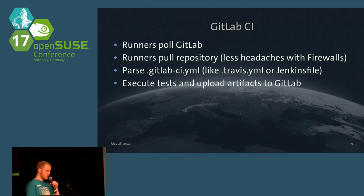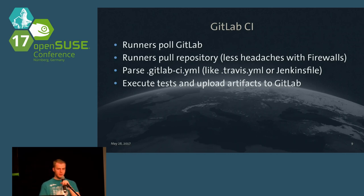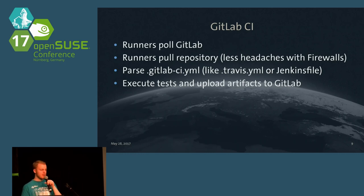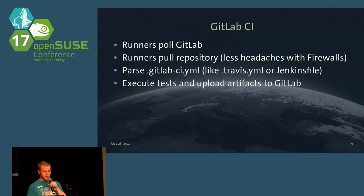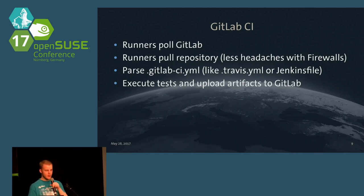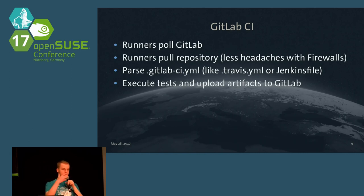The configuration of the build workflow — the steps that should be taken care of — is done in the GitLab CI YAML file. If you are already familiar with Travis or Jenkins 2.0 with the Jenkinsfile it's more or less the same. The runner will execute those tests and upload all artifacts back to GitLab, so if you build a package or a binary it will be available in GitLab.